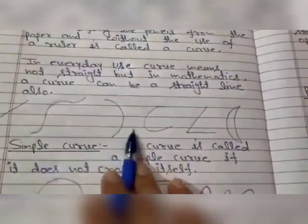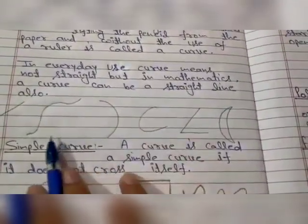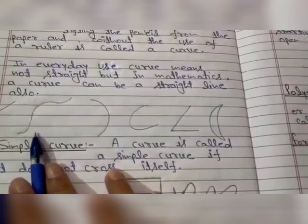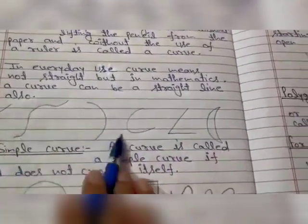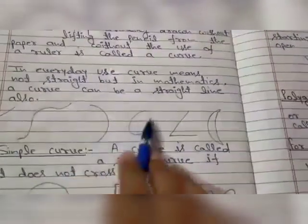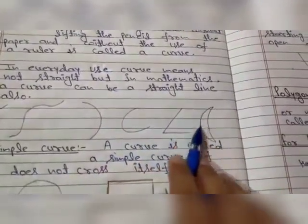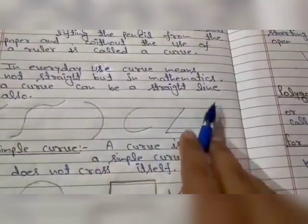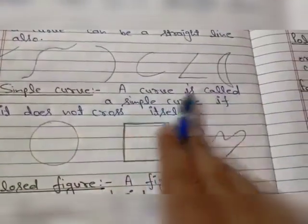Now these are examples of curves because these are drawn without using a ruler. So this is a curve, this is also a curve, this is a curve, this figure is a curve, and this is also a curve.